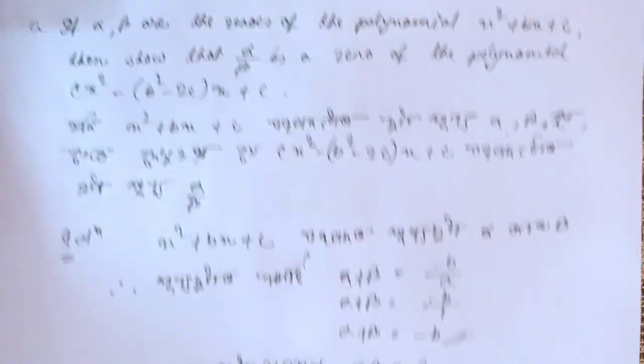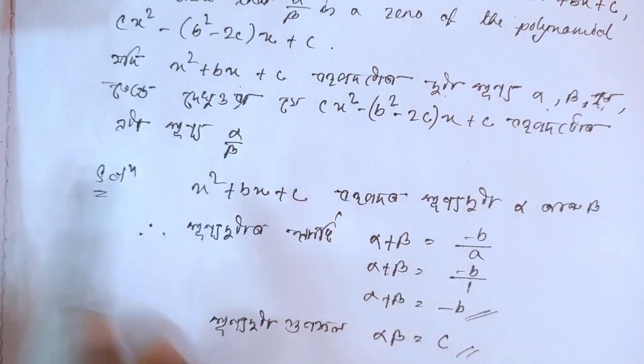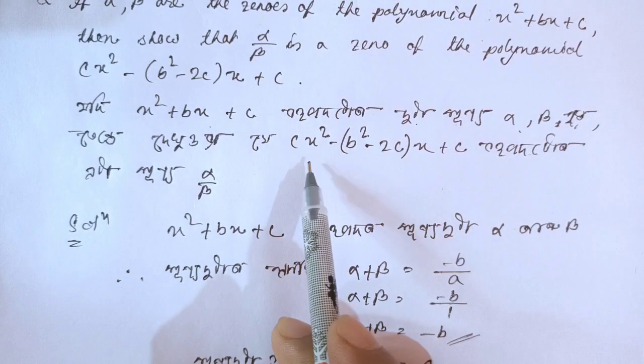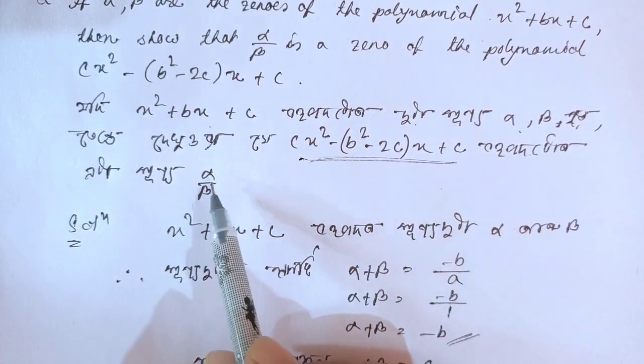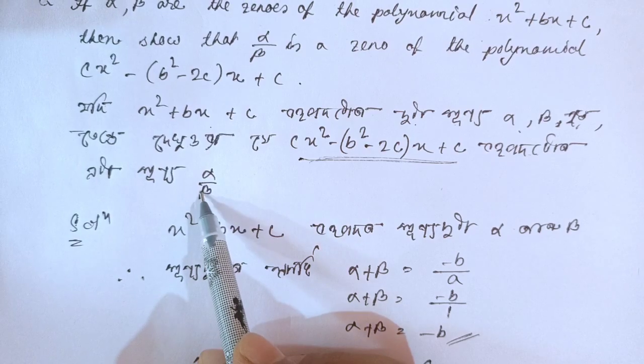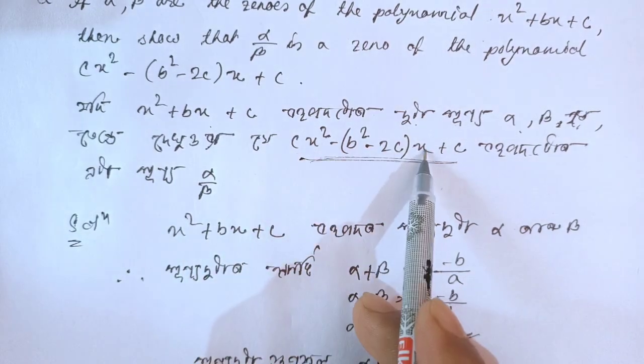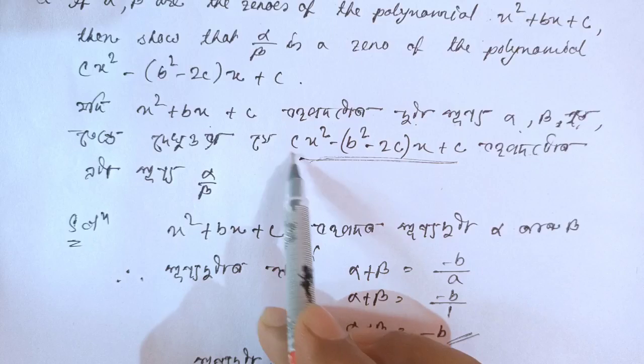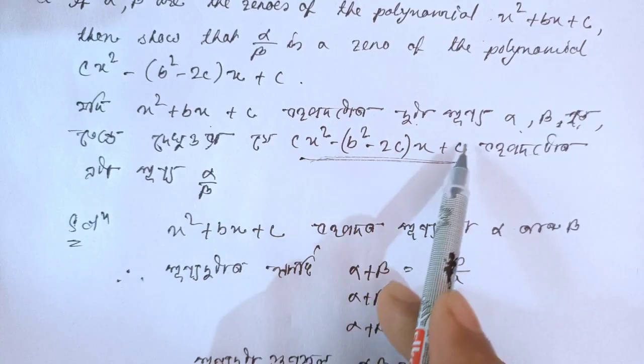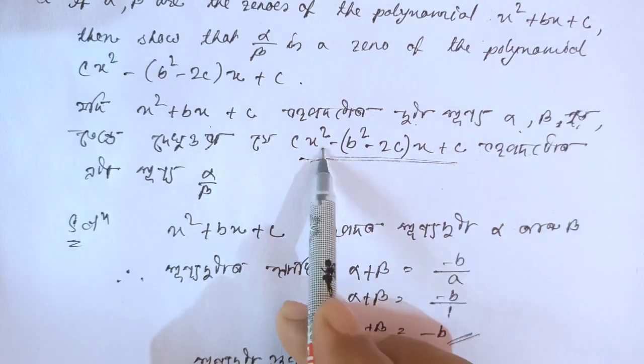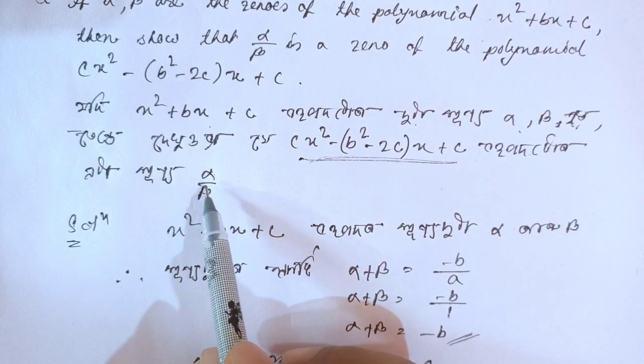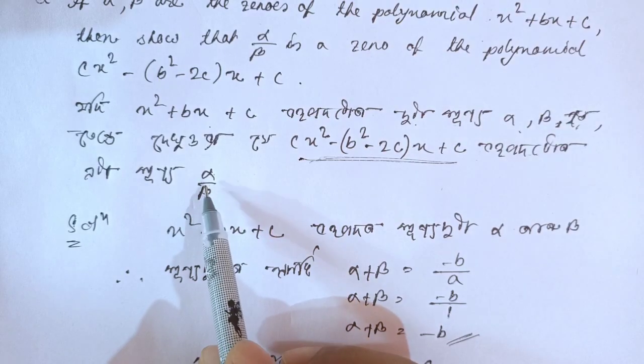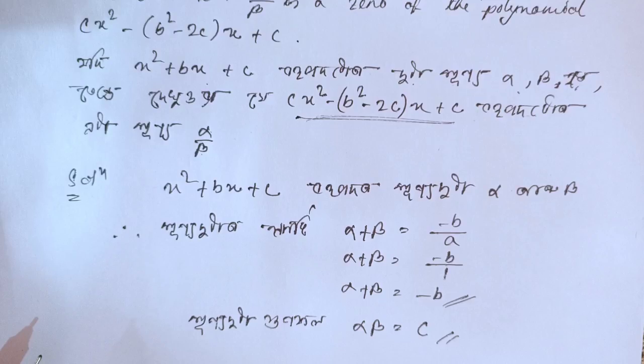Now we need to show that α/β is a zero of the polynomial. So we'll put α/β into the equation and show that it equals zero. We need to substitute α/β into P(x) and verify it becomes zero.